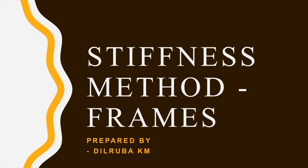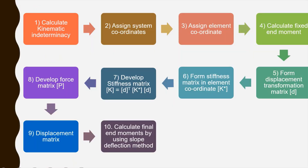Today we will discuss how to analyze frame structures using the stiffness method. There are several steps: the first step is to calculate the kinematic indeterminacy of the frame, and the second step is to assign the number of system coordinates, which will be equal to the number of degrees of freedom or kinematic indeterminacy.